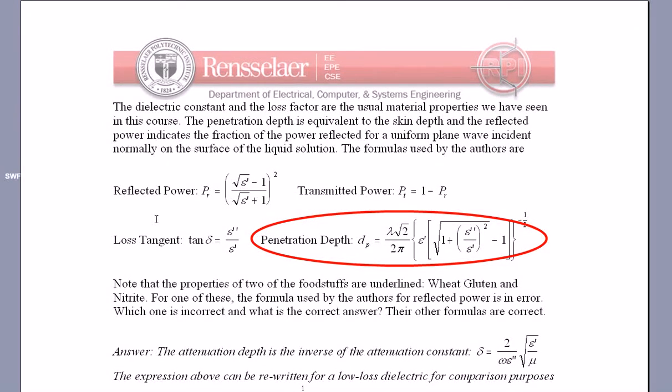The loss tangent, which you may or may not recall, is defined as epsilon double prime over epsilon prime. And penetration depth, which they've given here, these are formulas that were used by the authors to get these expressions. And they're all almost correct.